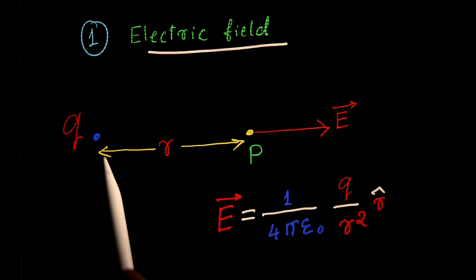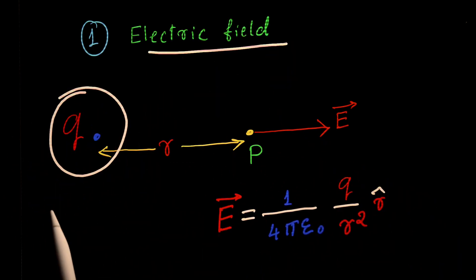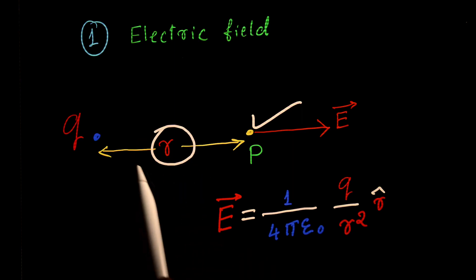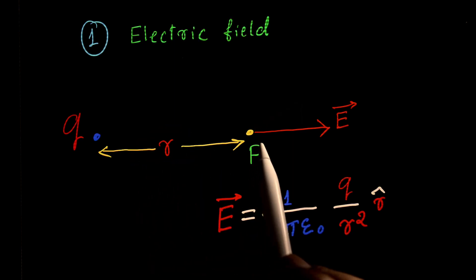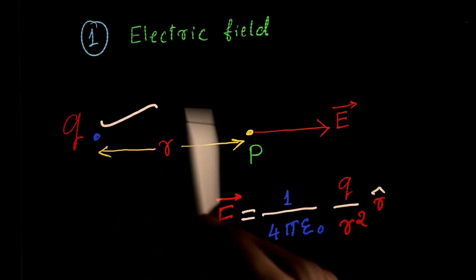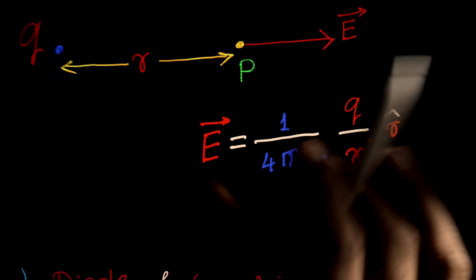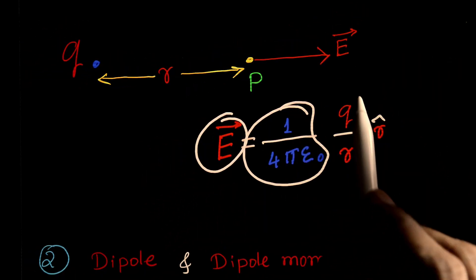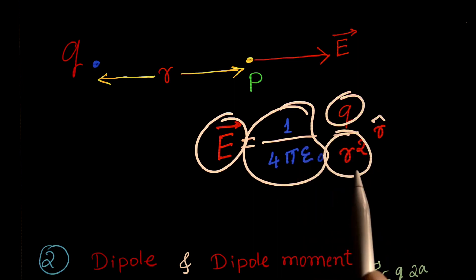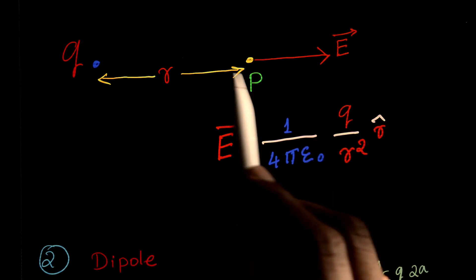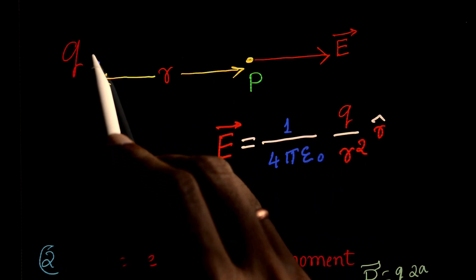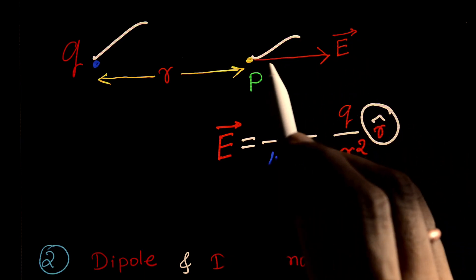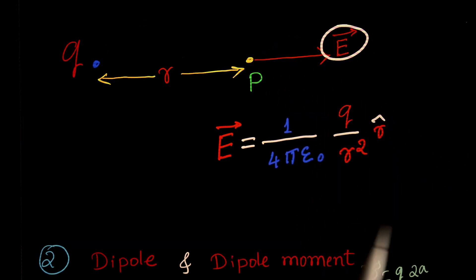What is electric field? There is a point charge q and a point P at a distance r. The electric field at point P due to charge q is given by the expression: E = (1/4πε₀) × q/r², where r is the distance between the point charge and point P, and r̂ is a unit vector in the direction of the electric field.